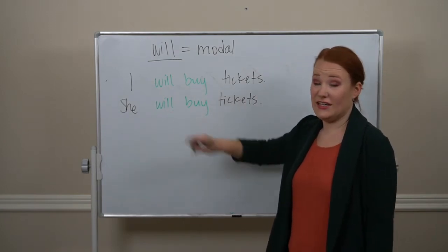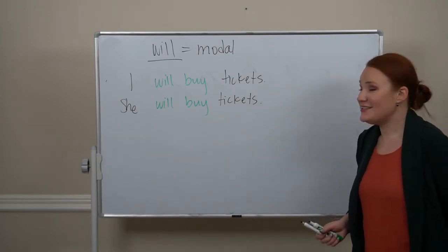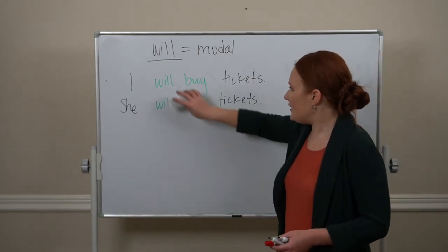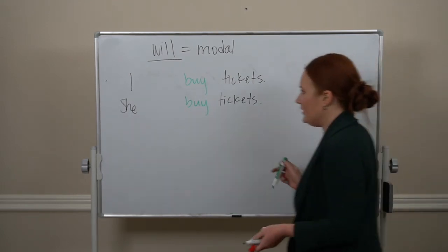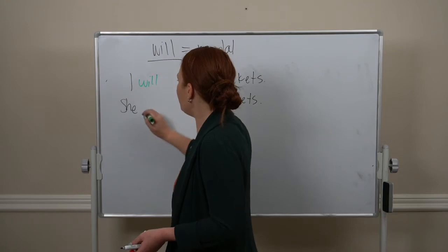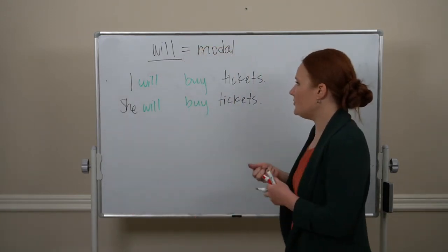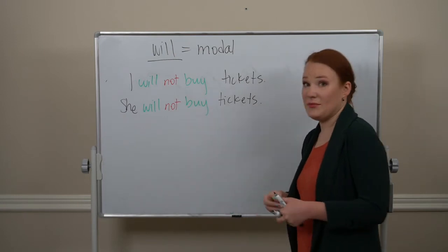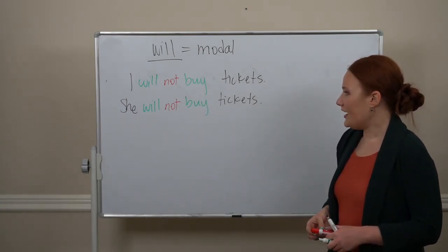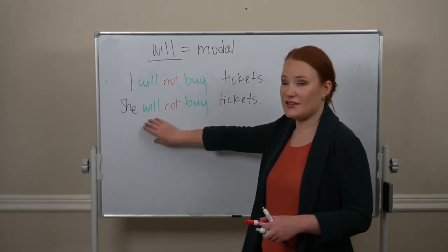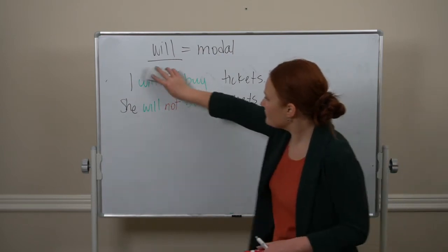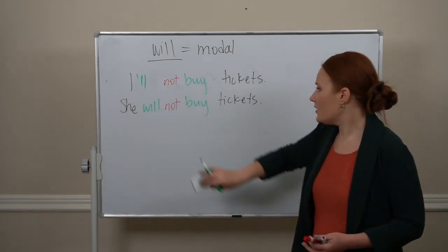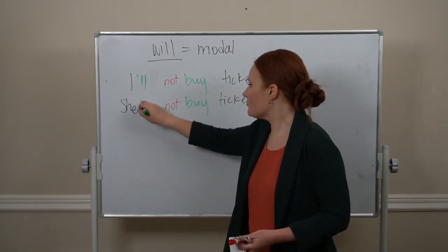Being a modal also means that to make a negative form, we don't need 'do' or 'does.' Instead, we add 'not' between our auxiliary verb 'will' and our main verb: 'I will not buy tickets,' 'she will not buy tickets.'